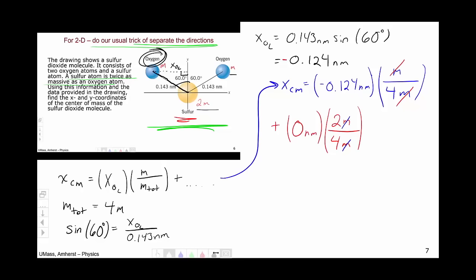Finally, we would move on to our oxygen atom on the right. If this distance is 0.124, then this distance is going to be 0.124. So we're going to be left with 0.124 nanometers. And again, the weight is going to be the mass of the oxygen atom over the total mass 4m. And we see that the m's again cancel.